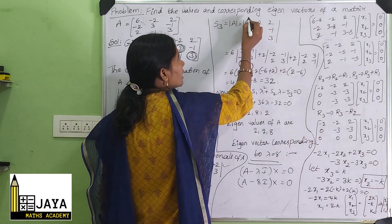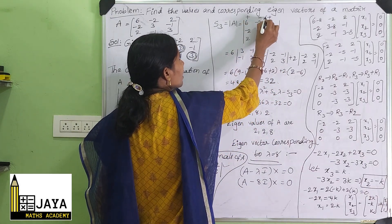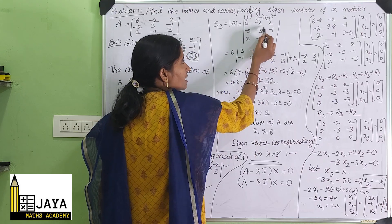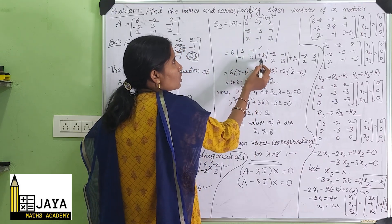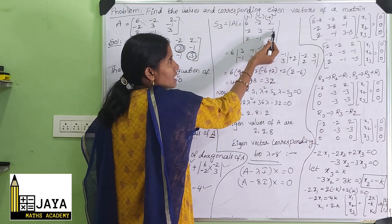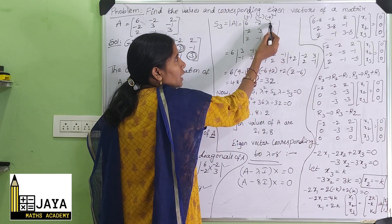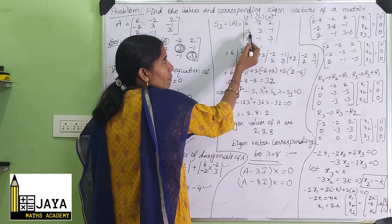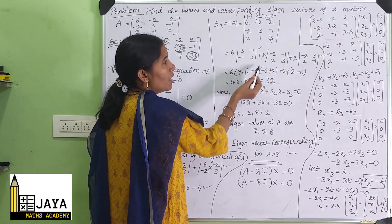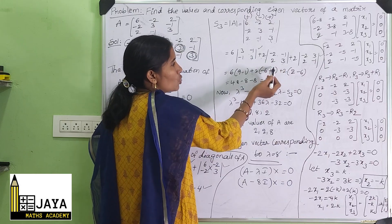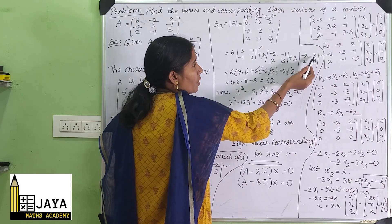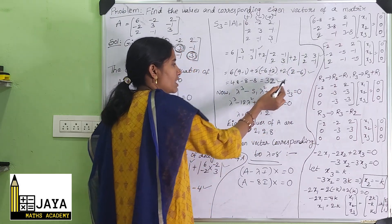Next, S3 is the determinant of A, expanding with plus-minus-plus signs. Expanding: 6 × det[[3,-1],[-1,3]] + 2 × det[[-2,-1],[2,3]] + 2 × det[[-2,3],[2,-1]]. Simplifying: 6×(9-1) + 2×(-6+2) + 2×(2-6) = 48 - 8 - 8 + ... = 32. So S3 = 32.